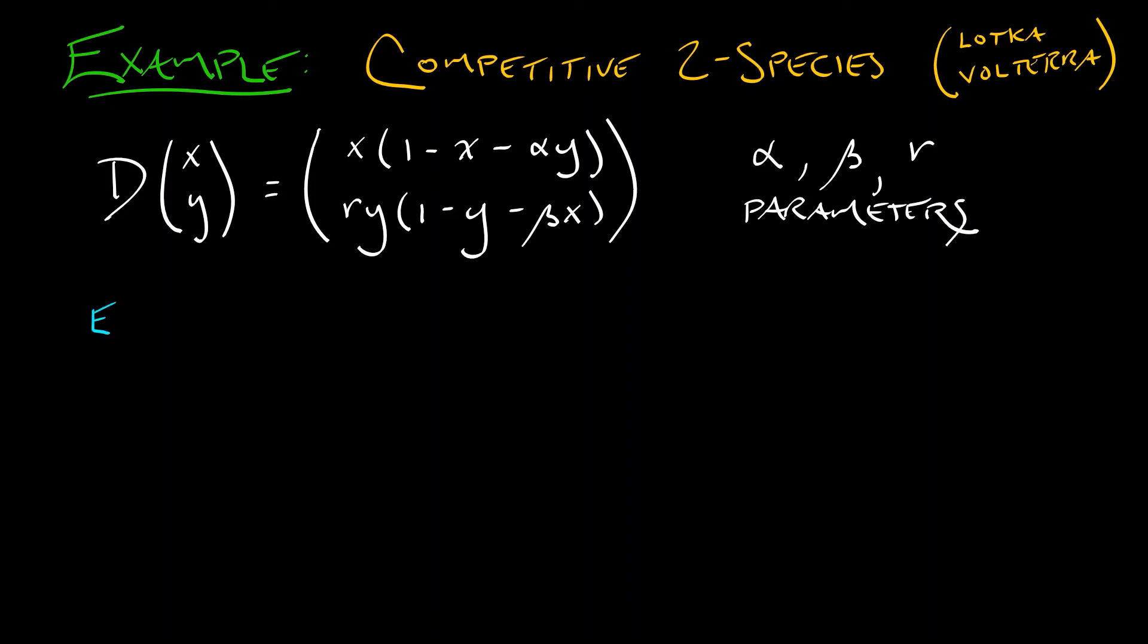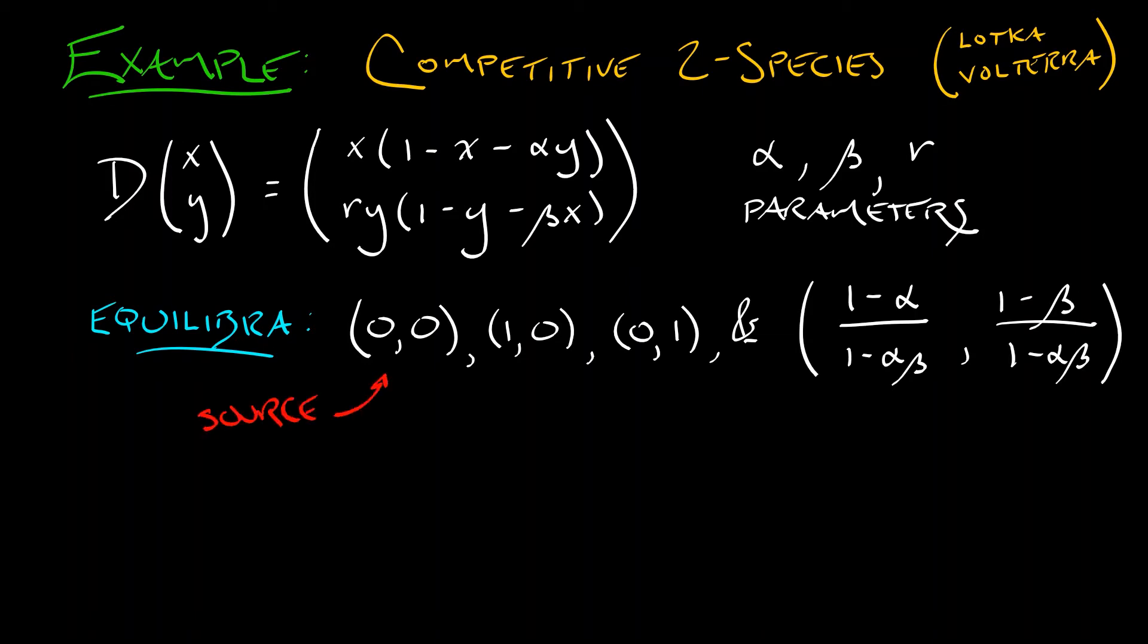Recall, we found four possible equilibria in this system at (0,0), (1,0), (0,1), and then the really interesting one at (1-alpha)/(1-alpha*beta), (1-beta)/(1-alpha*beta). Now, the origin was always a source.